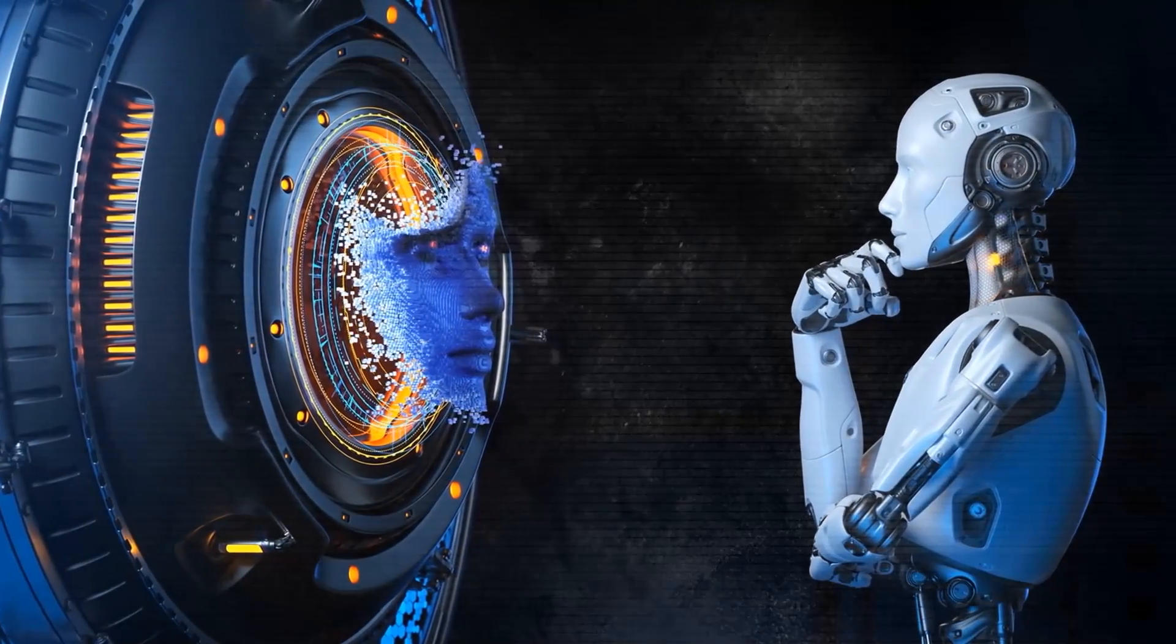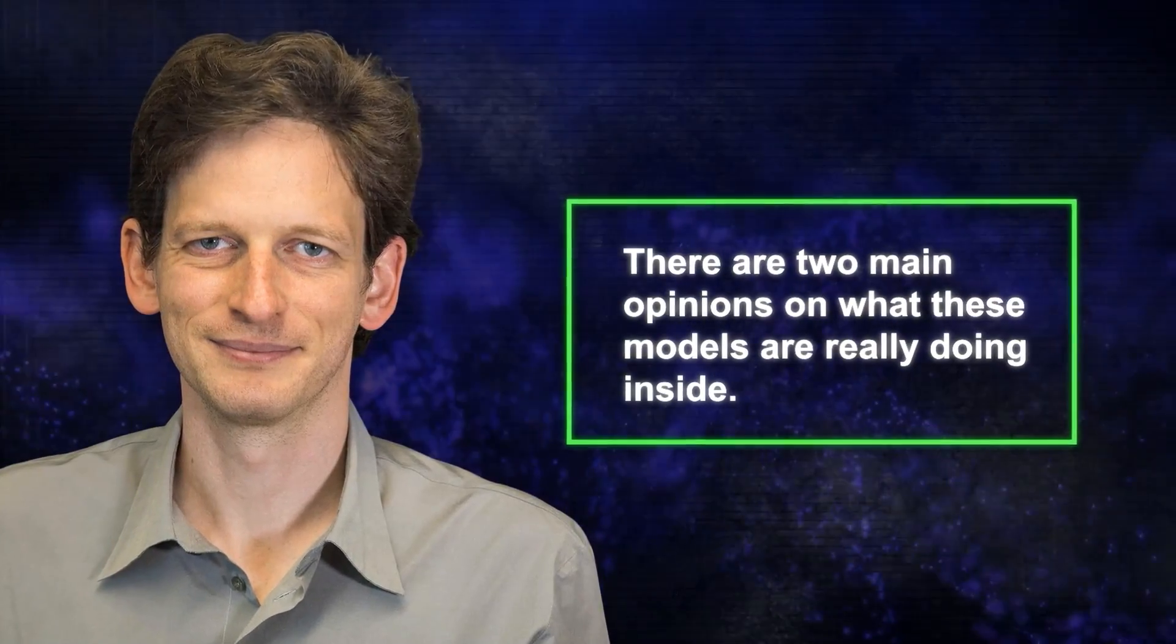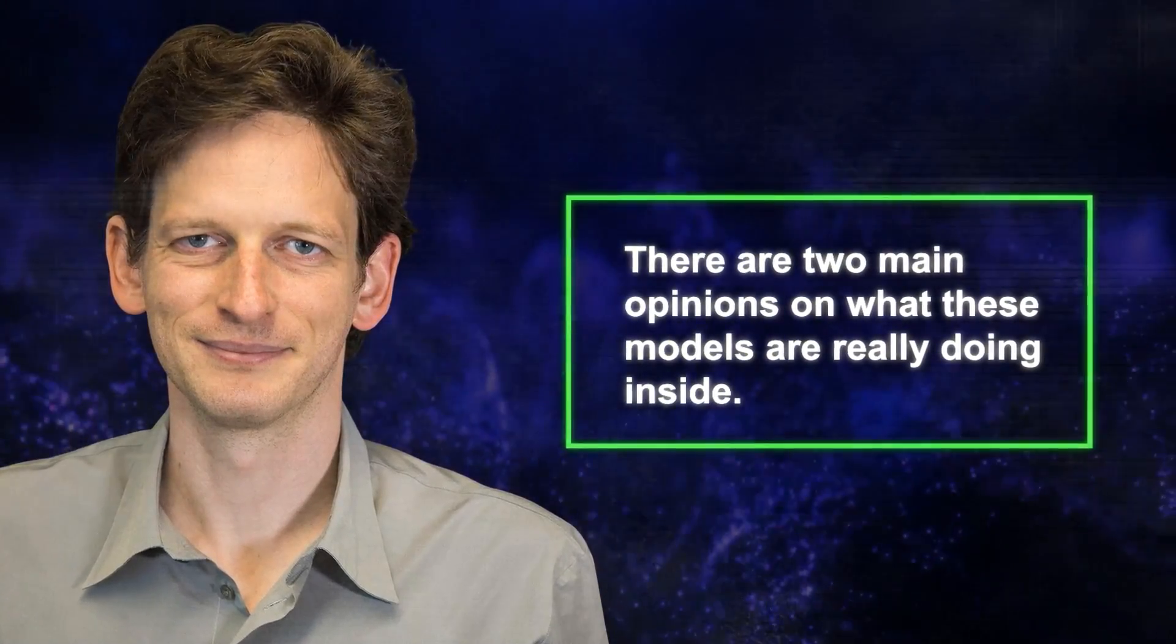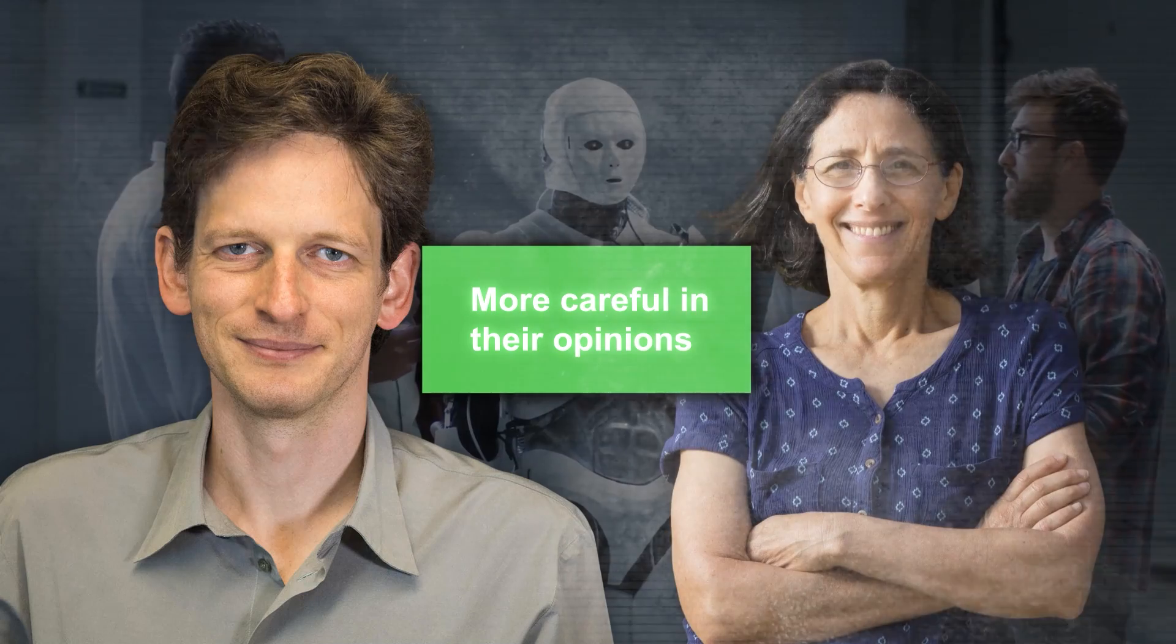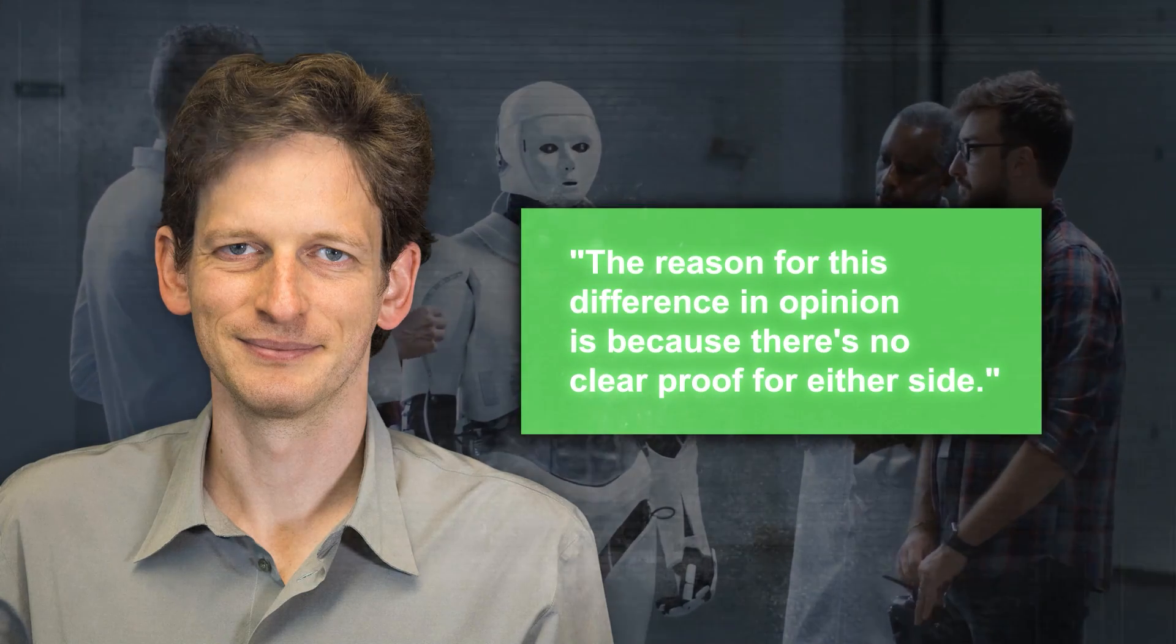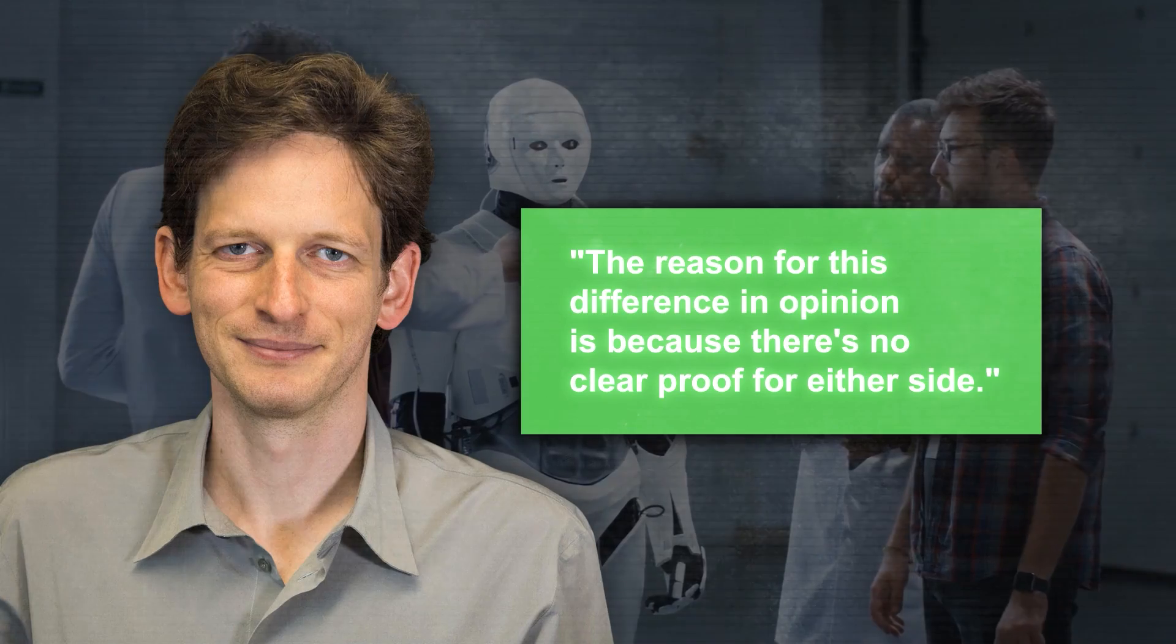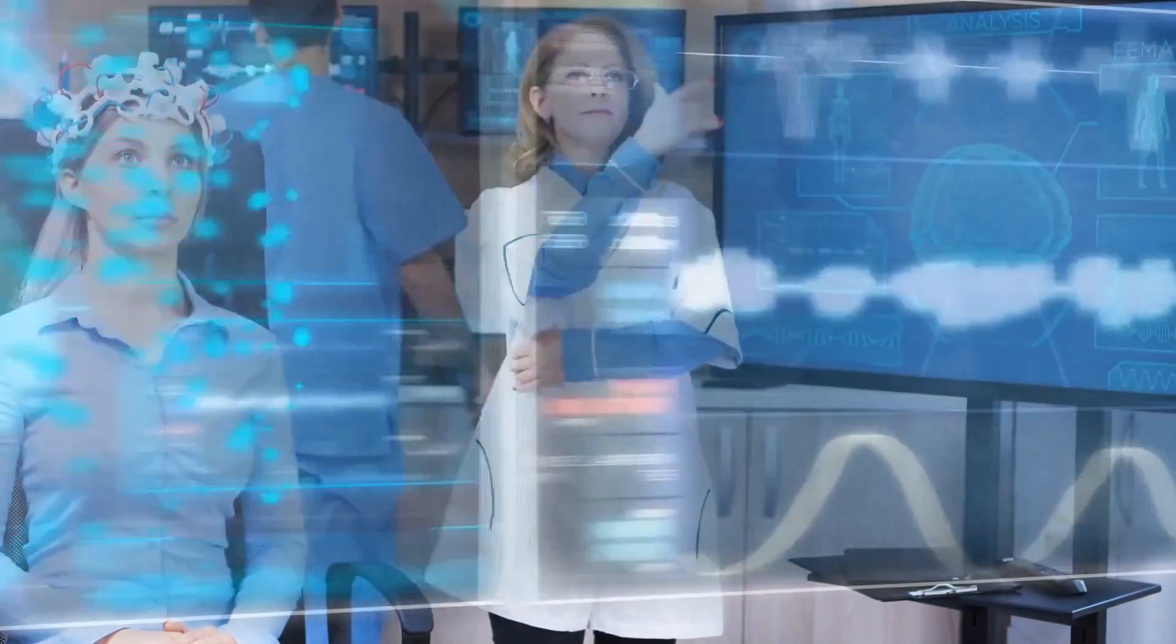Tomur Ullman, a scientist, says that there are two main opinions on what these models are really doing inside. Some believe they show signs of true understanding. Others, including Ullman and Mitchell, are more careful in their opinions. Ullman mentions that the reason for this difference in opinion is because there's no clear proof for either side.